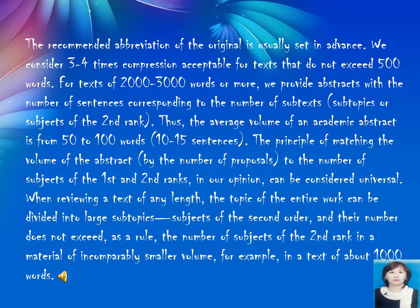The principle of matching the volume of the abstract by the number of proposals to the number of subjects of the first and second ranks, in our opinion, can be considered universal when reviewing a text of any length. The topic subject of the second rank can be divided into large subtopic subjects of the second order, and their number does not exceed, as a rule, the number of subjects of the second rank in a material of comparably smaller volume, for example, in a text of about 1000 words.